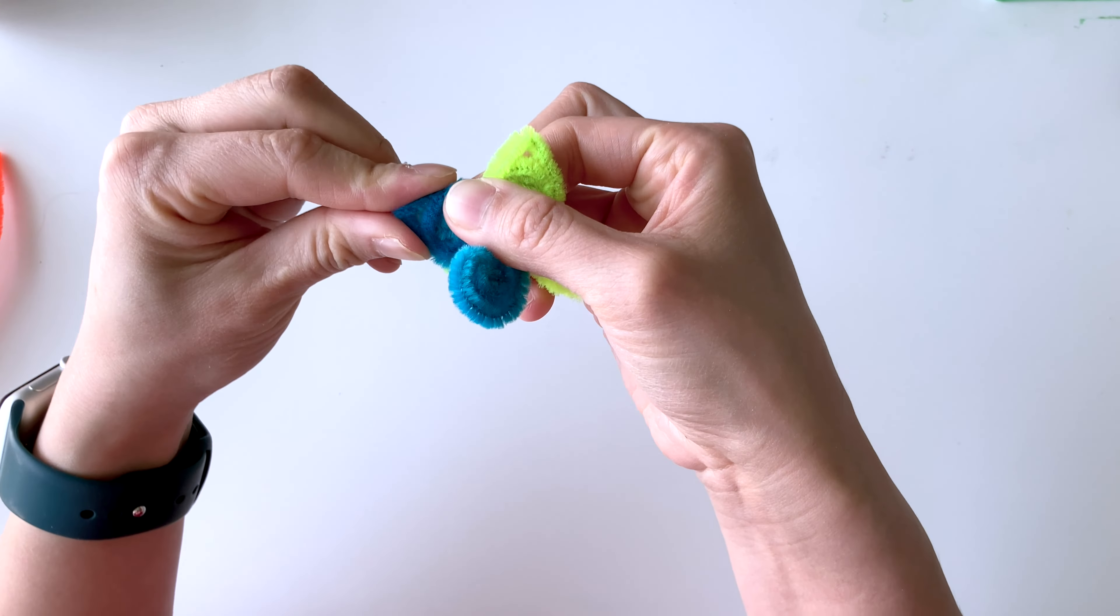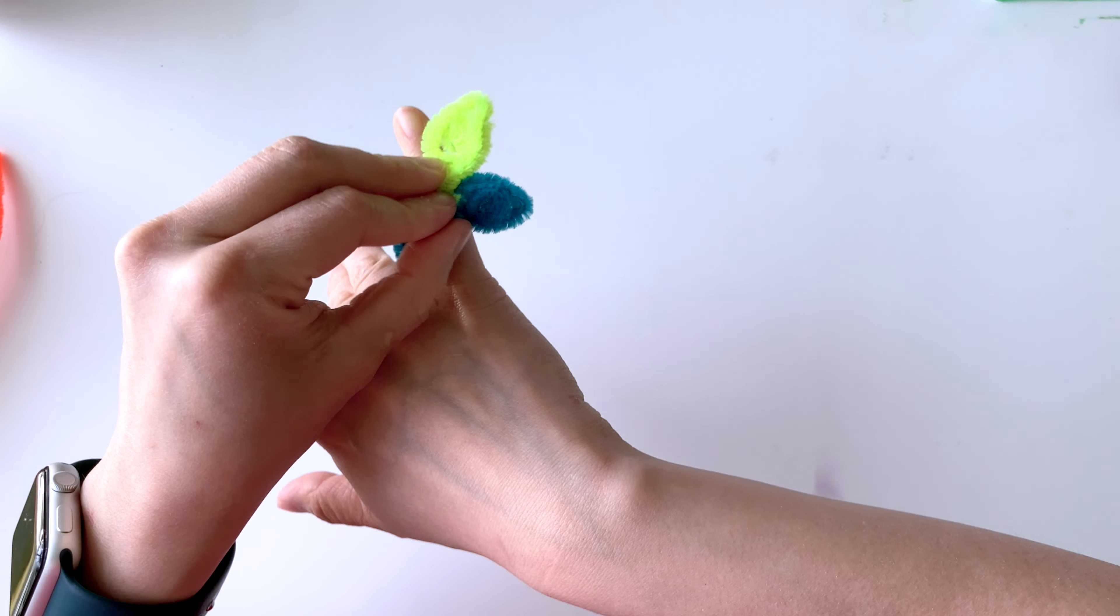So that means for the ends, you can see I'm just creating a point there by pushing in the two sides of the circle. And now do the same for all four of the wings.